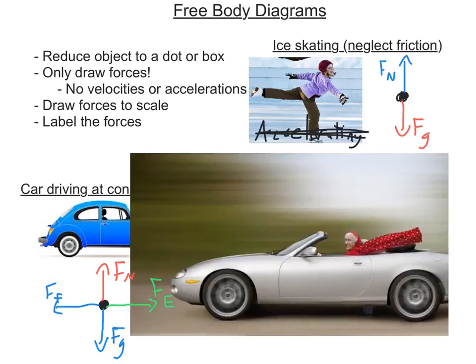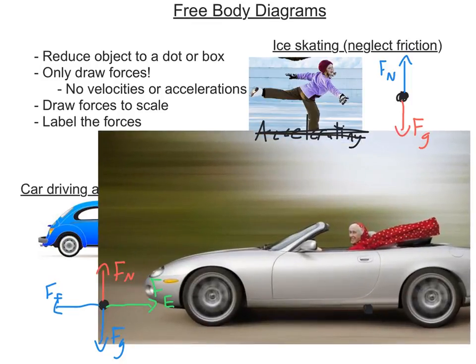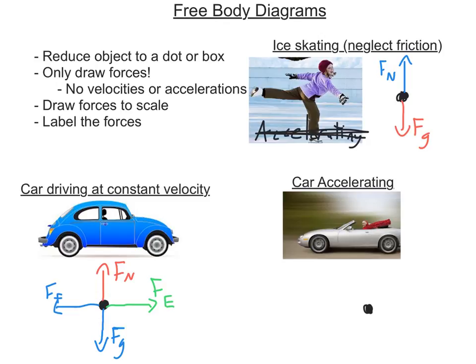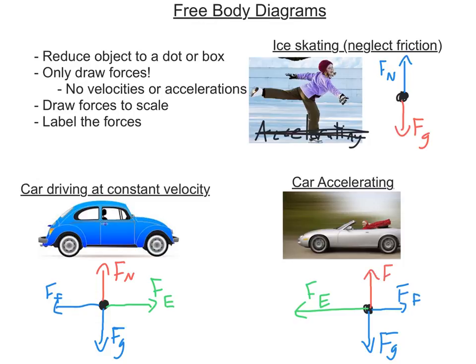In this next free body diagram, this car is accelerating to the left. My force of engine points to the left, but since she's speeding up, when I compare it to the force of friction, I need to draw friction smaller — the engine force is greater than friction, giving an acceleration to the left. Force of gravity goes down since she's on Earth, and normal force goes up since she's on a surface. Normal force and force of gravity are balanced in this case as well.